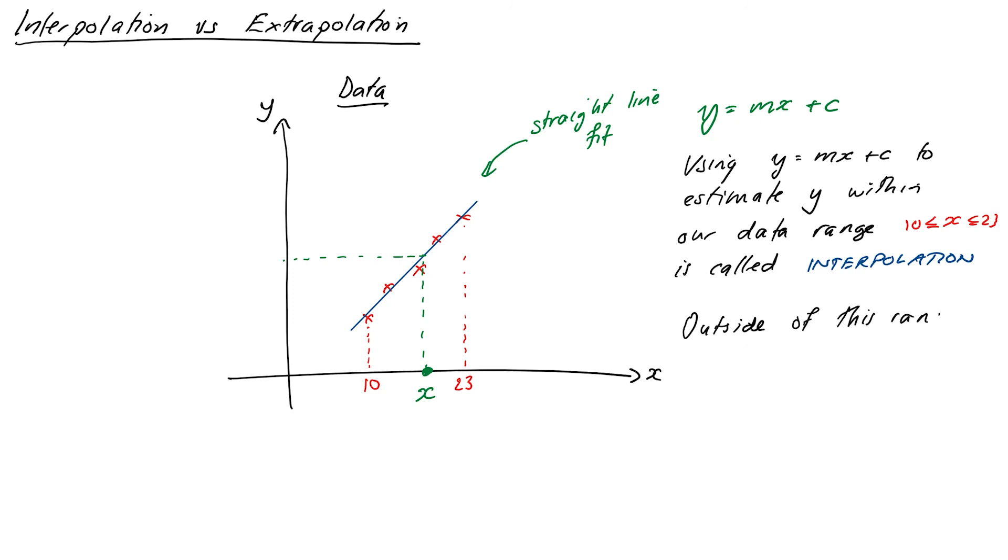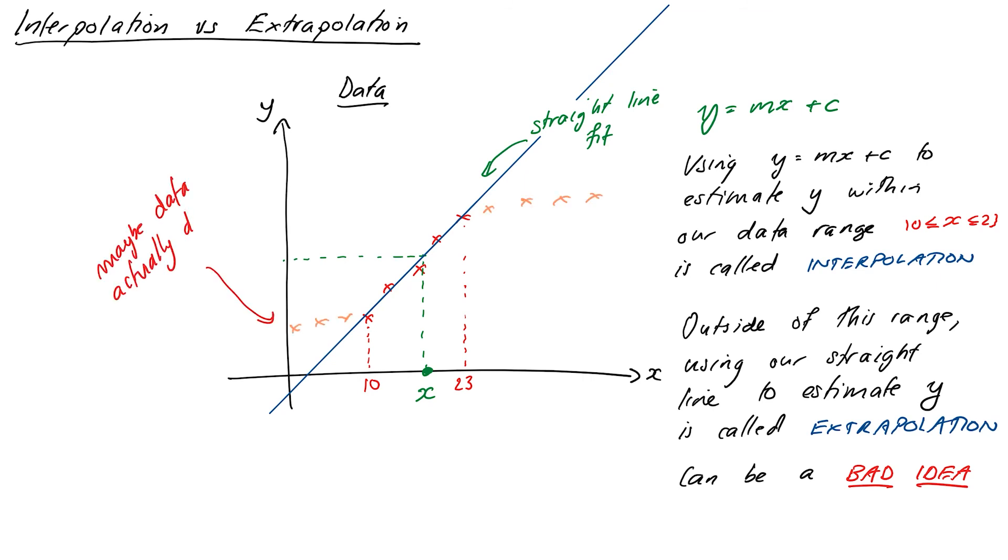However, if we were to try and use our equation to find out values of y outside of the data we've predicted or collected, then this can lead to problems, because we don't necessarily know how our data behaves outside of our measured zone. So it could be that our data kind of tapers off after the measured range, and maybe before it as well. So if that's what was actually happening in our physical system, and we used our straight line to predict what happens for some large value of x, then we could end up miles off.